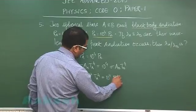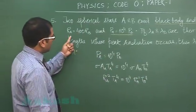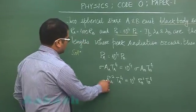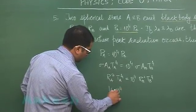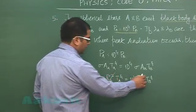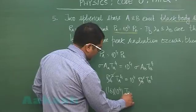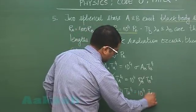R_B square T_B raised to the power 4. Now let's see, R_A is 400 times the radius of B. So this is going to be 16 into 10 raised to the power 4. That would be the value of R_A square upon R_B square, and T_A to the 4 is 10 raised to the power 4 times T_B raised to the power 4.